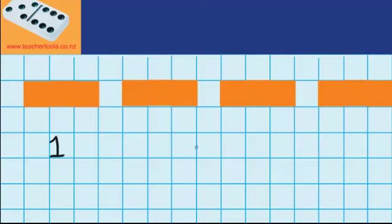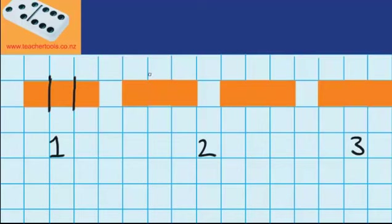So I'm going to put person 1, person 2, and person 3 there. Now one way I can do that is by splitting each of these wafers into thirds. You can see I've split the first wafer into thirds, the second wafer into thirds, the third one into thirds, and the fourth one into thirds.